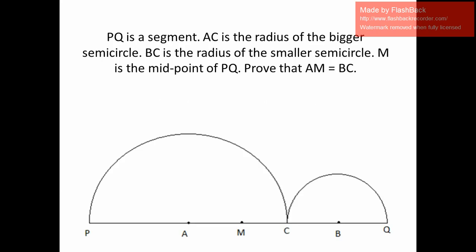PQ is a segment. AC is the radius of the bigger semicircle. BC is the radius of the smaller semicircle. M is the midpoint of PQ. Prove that AM is equal to BC.